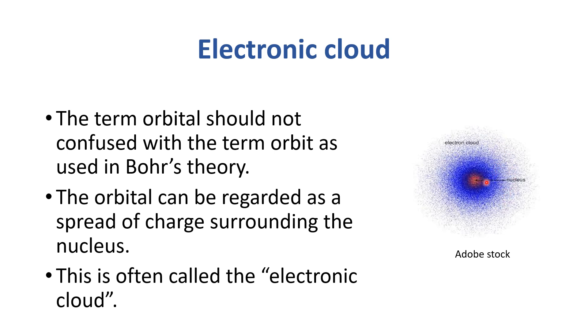Nearer to the nucleus, electron density zyada hoti hai. That's why the electronic cloud thicker hota hai. Nucleus se jis se door zyada jayenge, waise hi electronic cloud ki jo density hai, woh kam hoti jayegi.